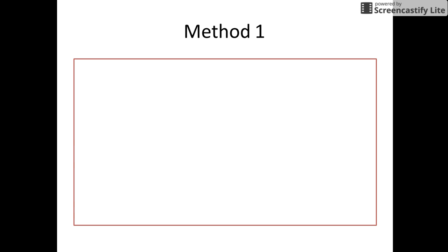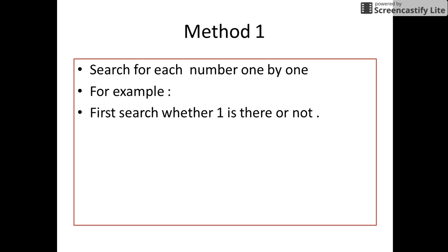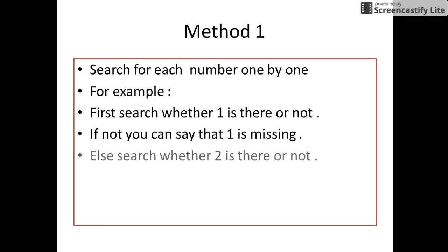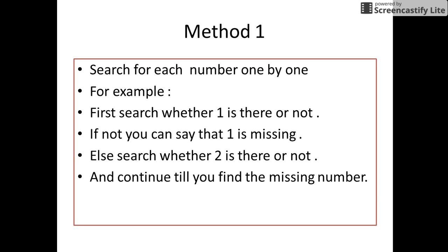The first thought that comes to our mind is search for each number one by one. For example, first we search whether there is 1 or not. If not, you can say that 1 is missing. Else we start searching for the number 2 and we continue till we find the missing number.